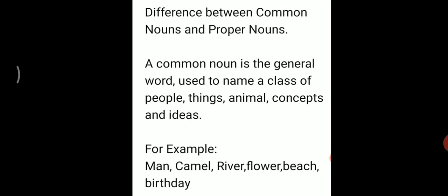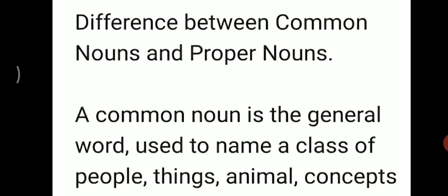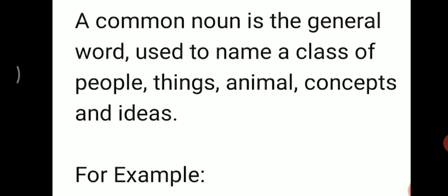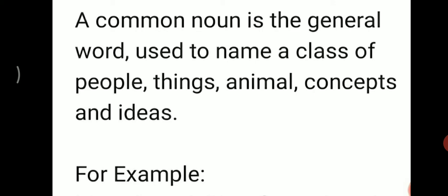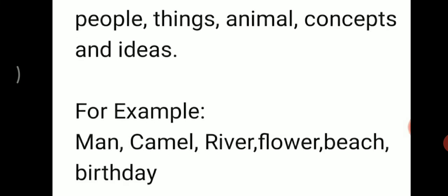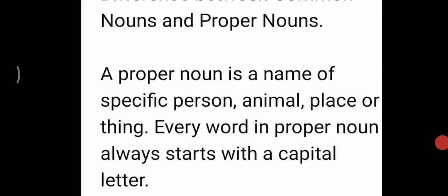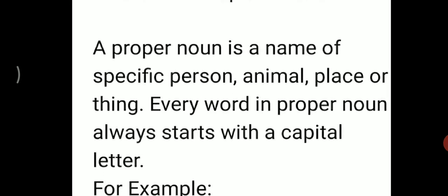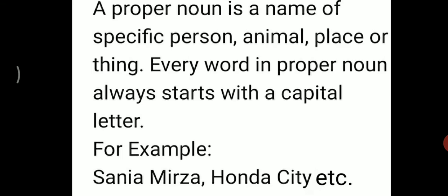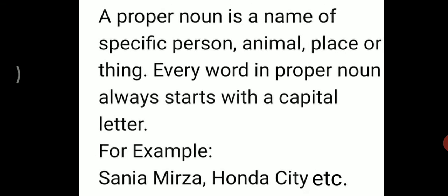So, in this way, we have learnt about common nouns and proper nouns. What is the difference between these both? A common noun is the general word used to name a class of people, things, animal, concepts and ideas — for example, man, camel, river, flower, beach, birthday. A proper noun is the name of a specific person, animal, place or thing, and every word in a proper noun always starts with a capital letter — for example, Sanya Mirza, Honda City, etc.